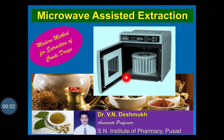The microwave oven is used in households for the preparation of cake or food. In this case, the heat is generated due to the microwaves. Irrespective of any drying method used for crude drugs, it contains a small amount of moisture. When this moisture inside the plant material gets heated due to the microwaves, it evaporates and creates great pressure on the cell wall, causing the rupturing of the cell wall.